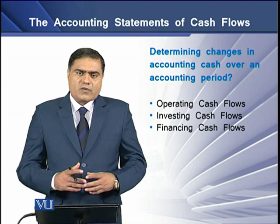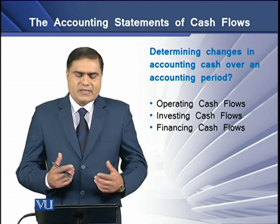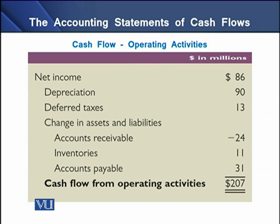To determine cash flows under these three heads, there is a certain mechanism. To determine operating cash flows, we prepare an operating activities section. In this section, we adjust net income for depreciation, deferred taxes, and changes in current assets and current liabilities. There are four items a firm needs to adjust in its net income: non-cash items, non-operating items, and changes in its net working capital items.